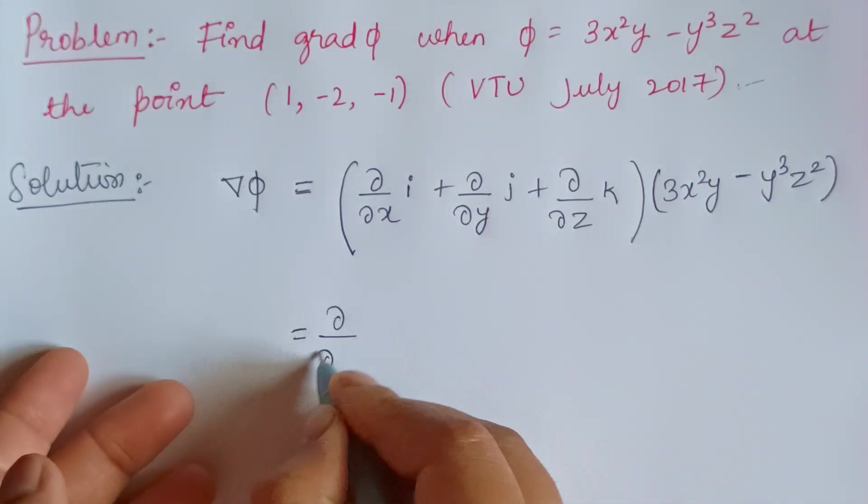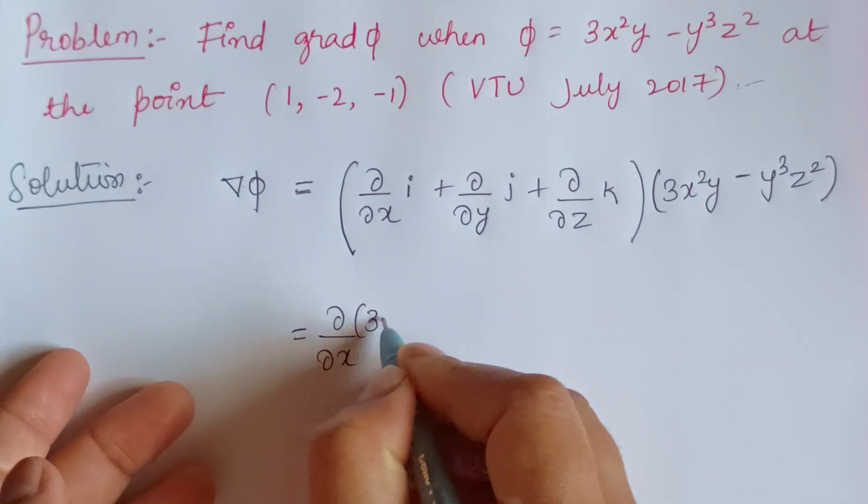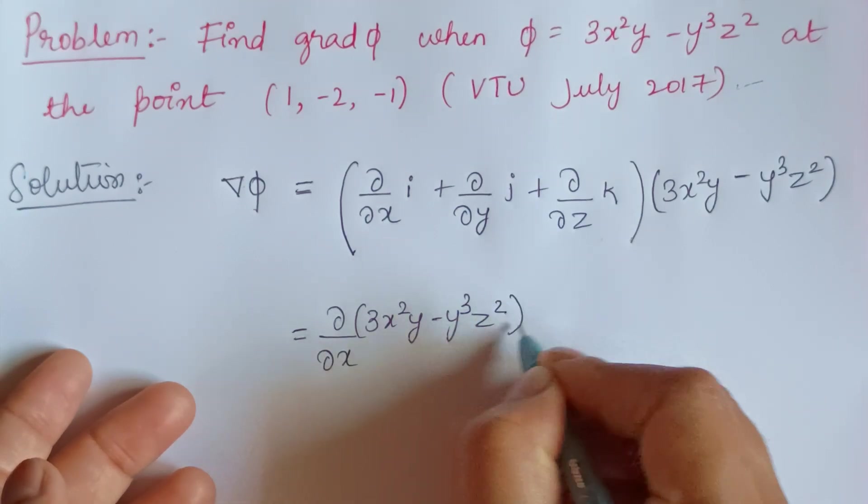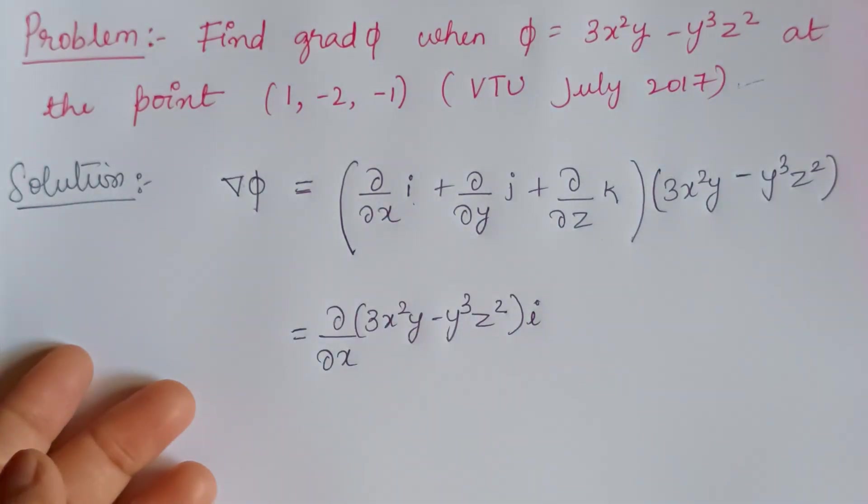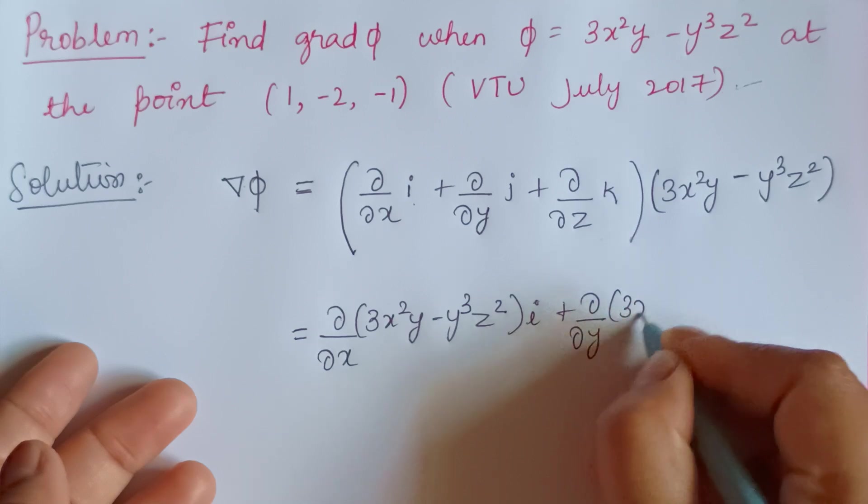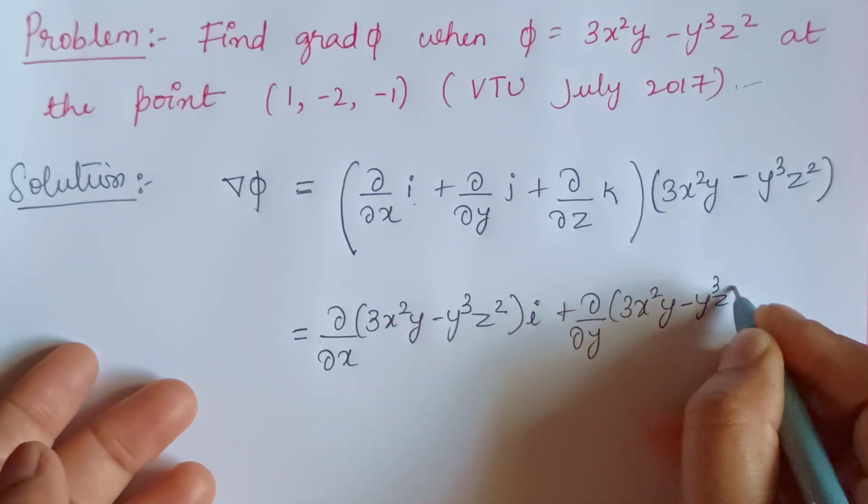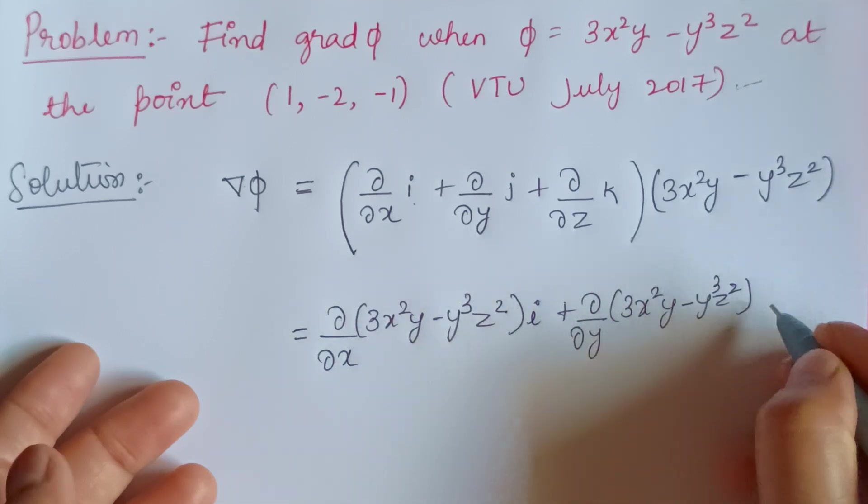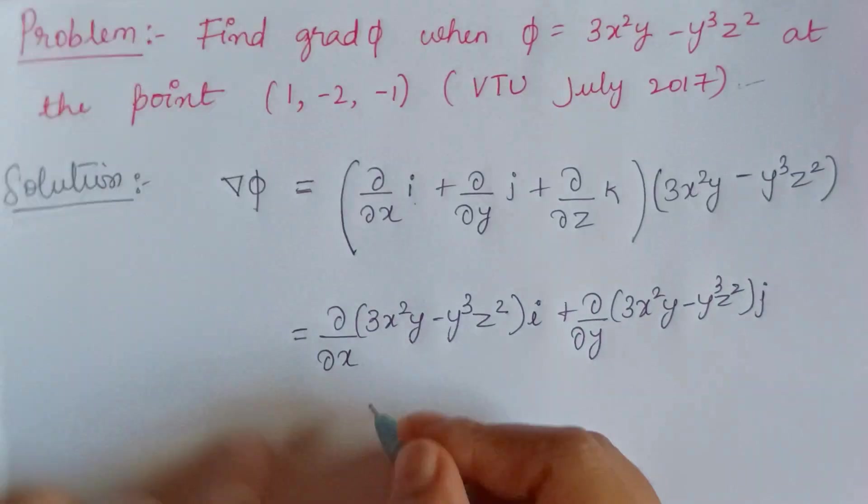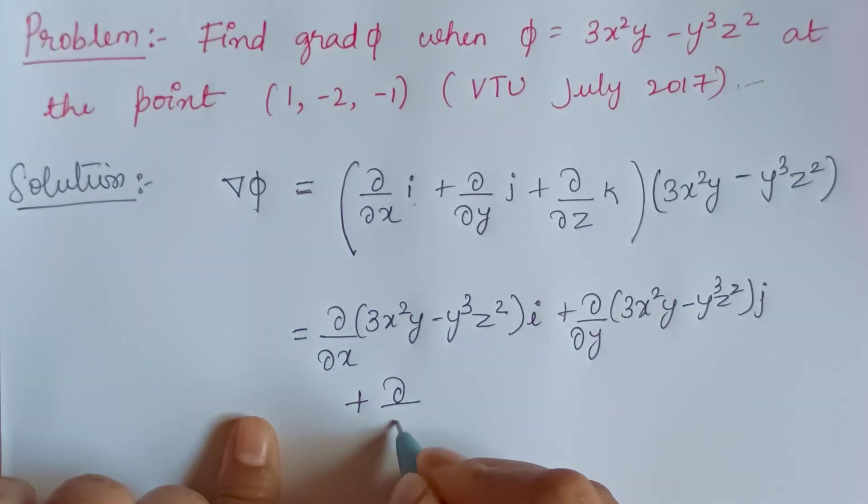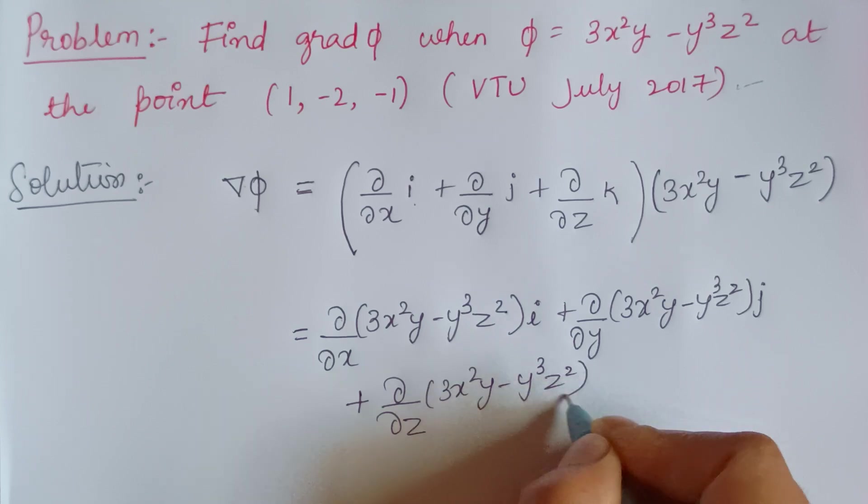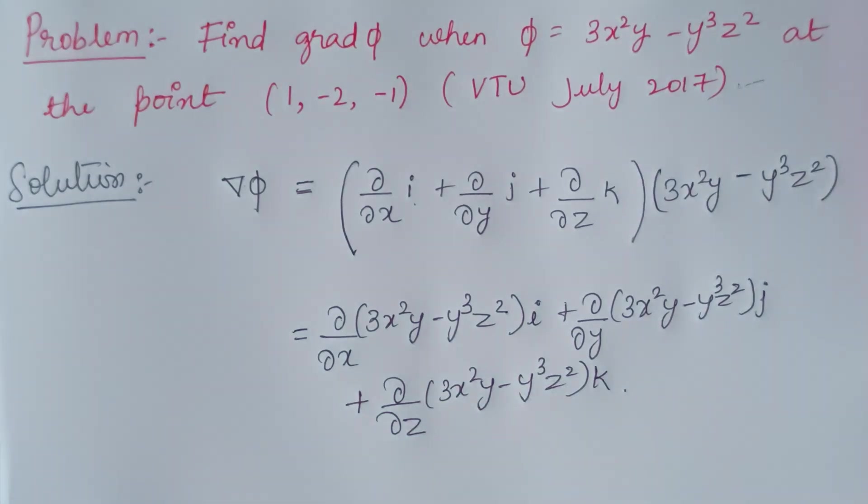Partial differentiation with respect to x of 3x²y minus y³z² into i, plus ∂/∂y of 3x²y minus y³z² into j, plus ∂/∂z of 3x²y minus y³z² into k.